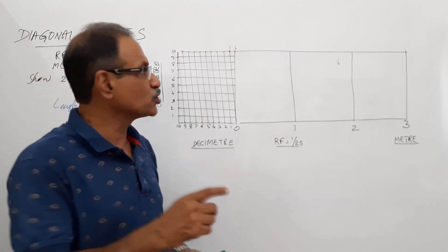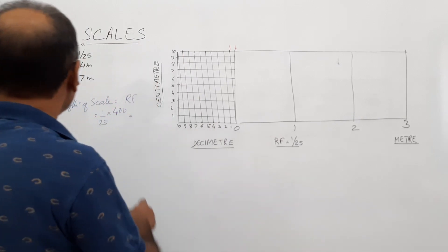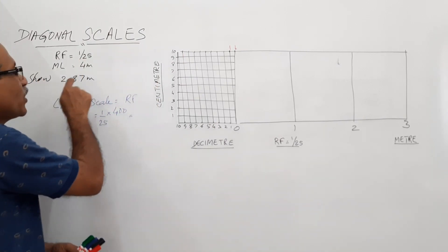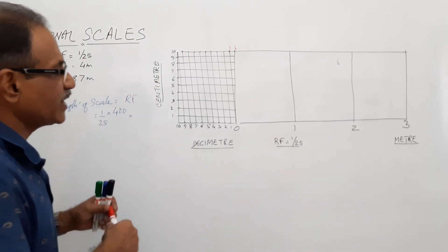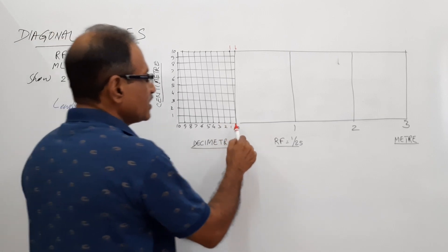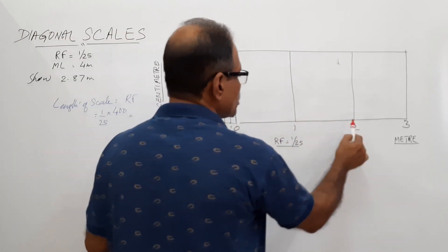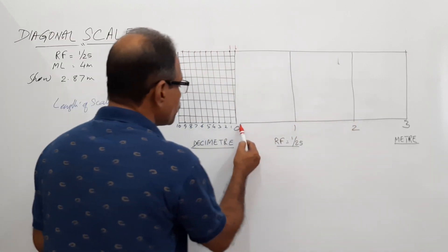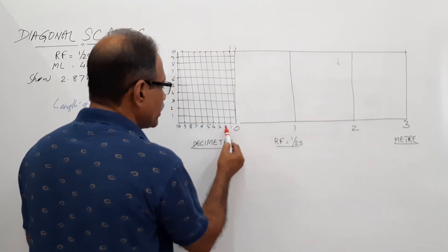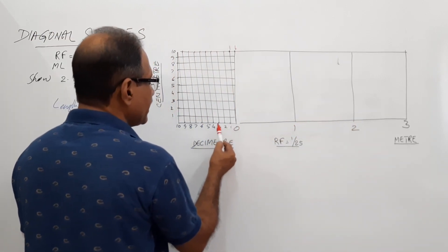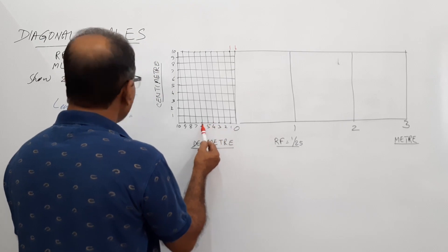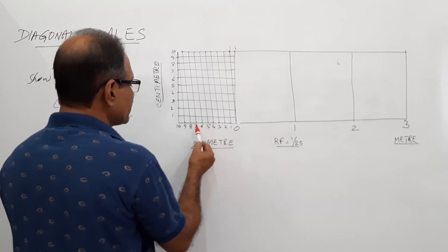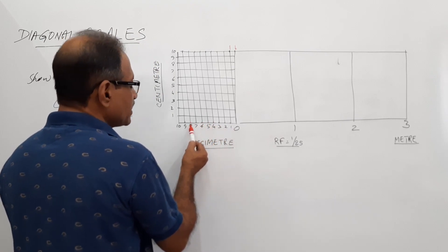Now you are asked to show 2.87 meters. This is 1 meter, this is 2 meters — 2.1, 2.2, 2.3, 2.4, 2.5, 2.6, 2.7, 2.8. If you go next it would be 2.9, but you cannot go there directly on the main scale.